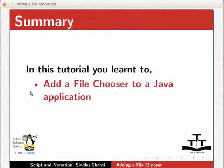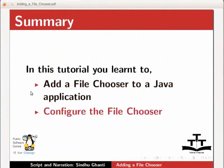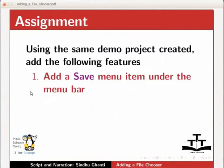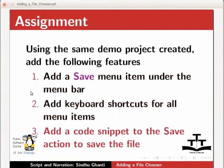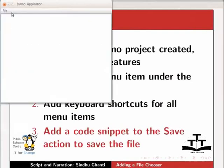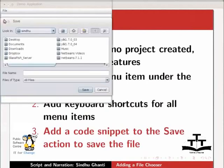In this tutorial, you learnt to add a file chooser to a Java application and configure the file chooser. As an assignment, use the same demo project we have created and add the following features: add a Save menu item under the menu bar, add keyboard shortcuts for all menu items, and add a code snippet to the save action to save the file. I have already created a similar assignment where the file chooser displays the save option under the file menu and gives you the option to save the text file which you open.